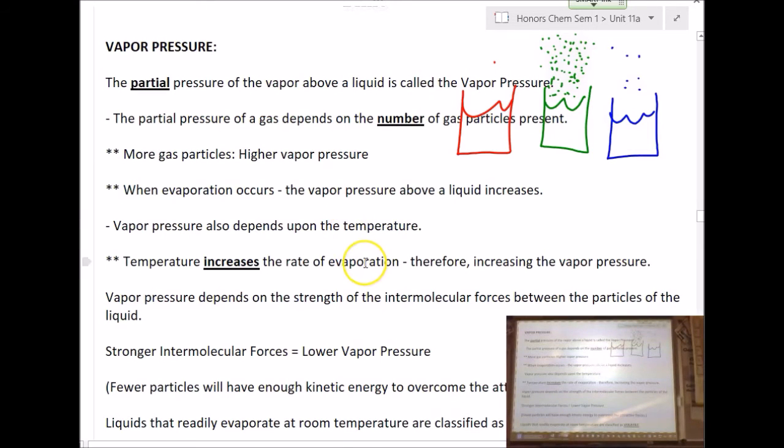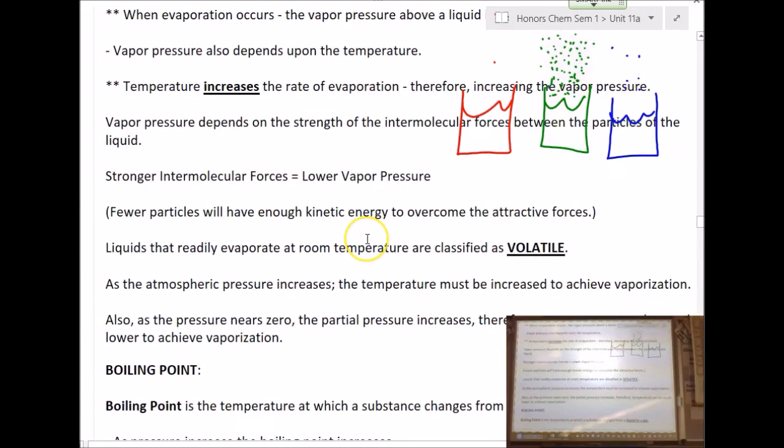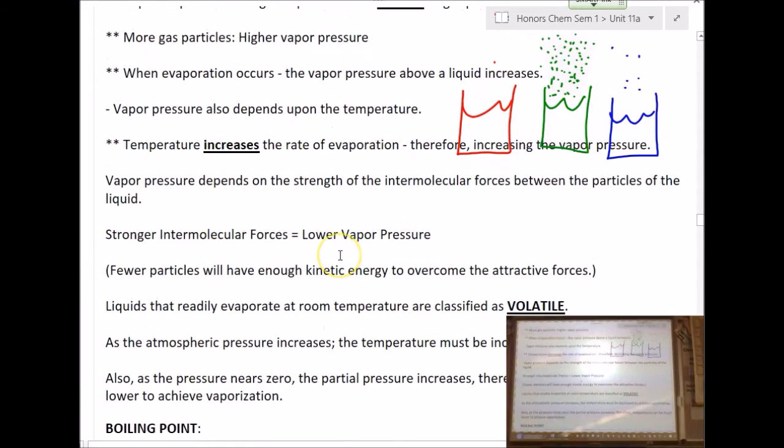Gasoline is also a volatile substance - it likes to evaporate easily, and it burns. Strong intermolecular forces mean low vapor pressure. Of these three containers, the one on the left is the strongest, that's the weakest, that's in the middle in terms of different intermolecular forces.